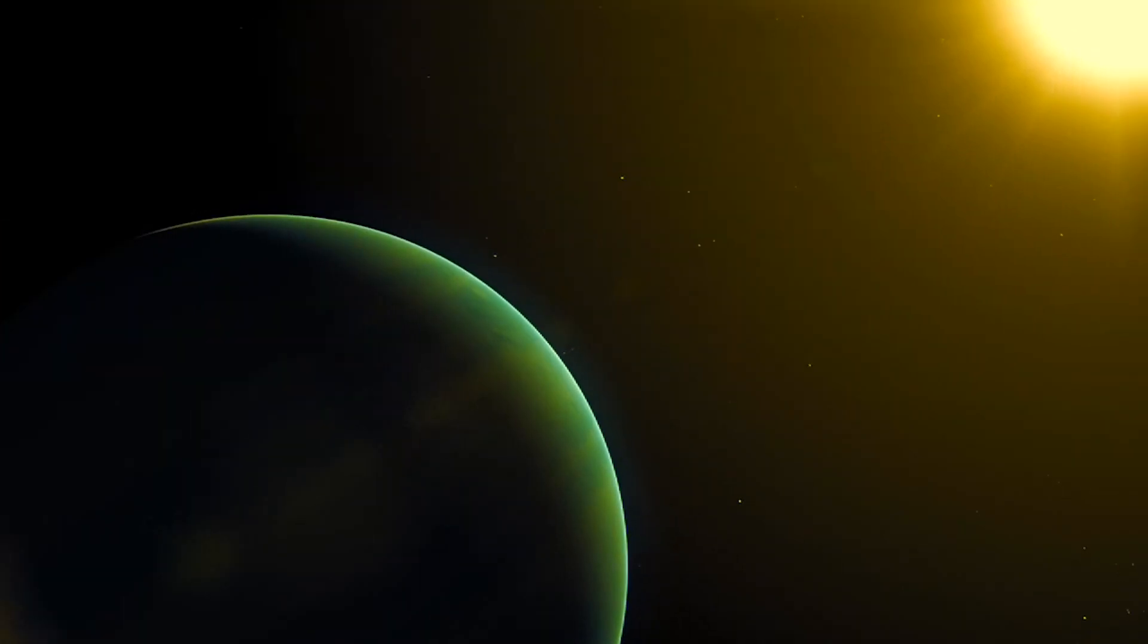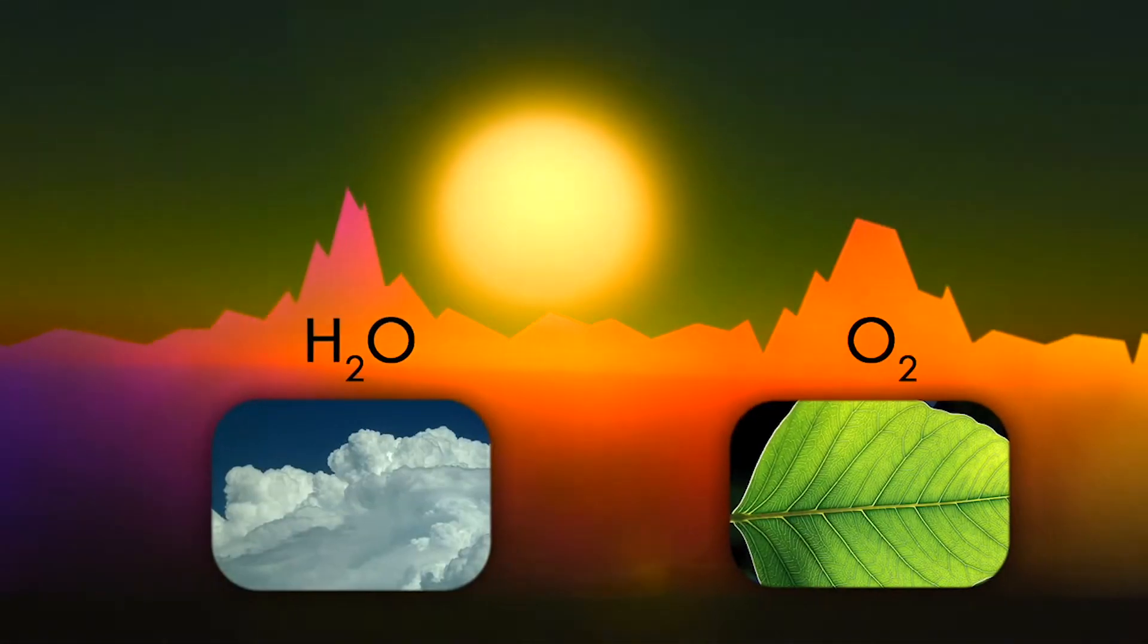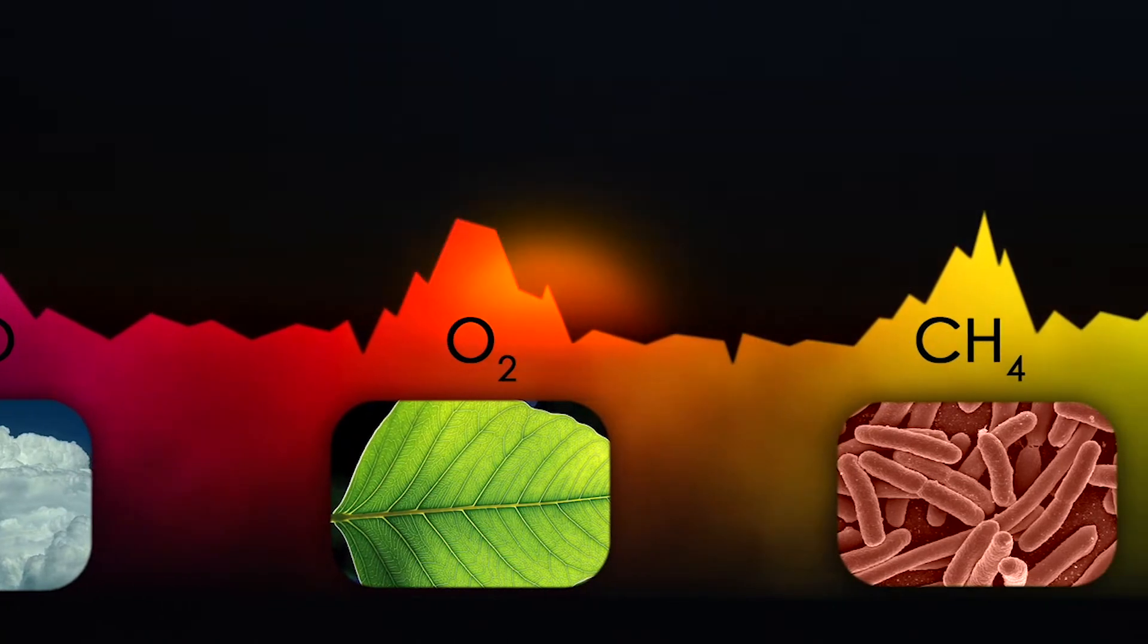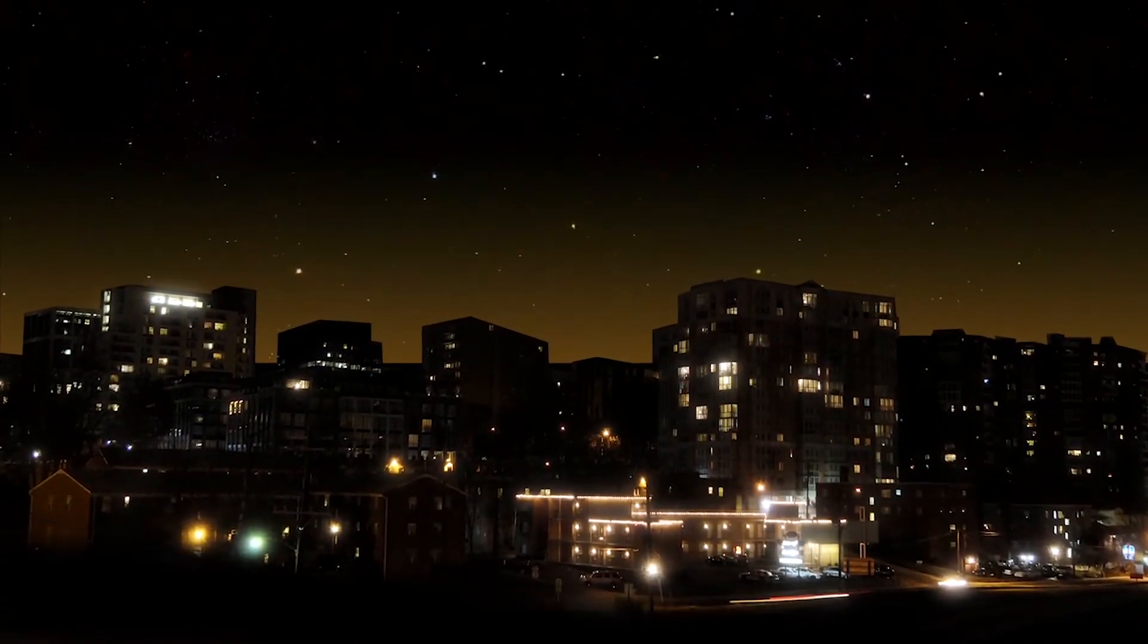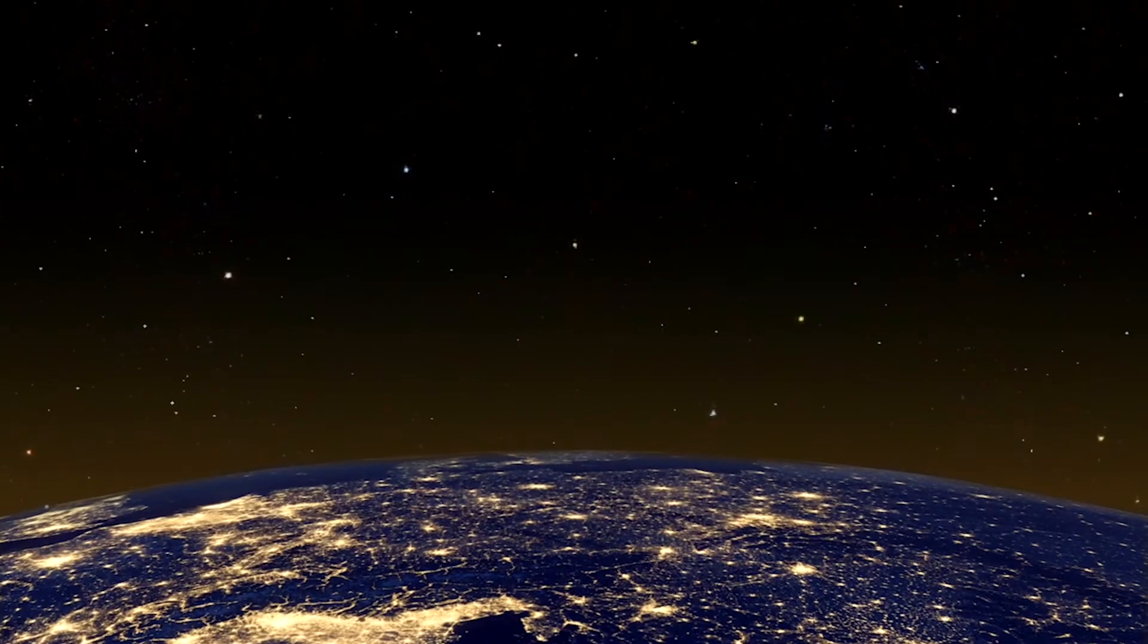As detection methods improve, astronomers will search the atmospheres of Earth-sized planets for signs of life such as water vapor, oxygen, and methane, taking us one step closer to finding a world like our own, all thanks to some flickering starlight.